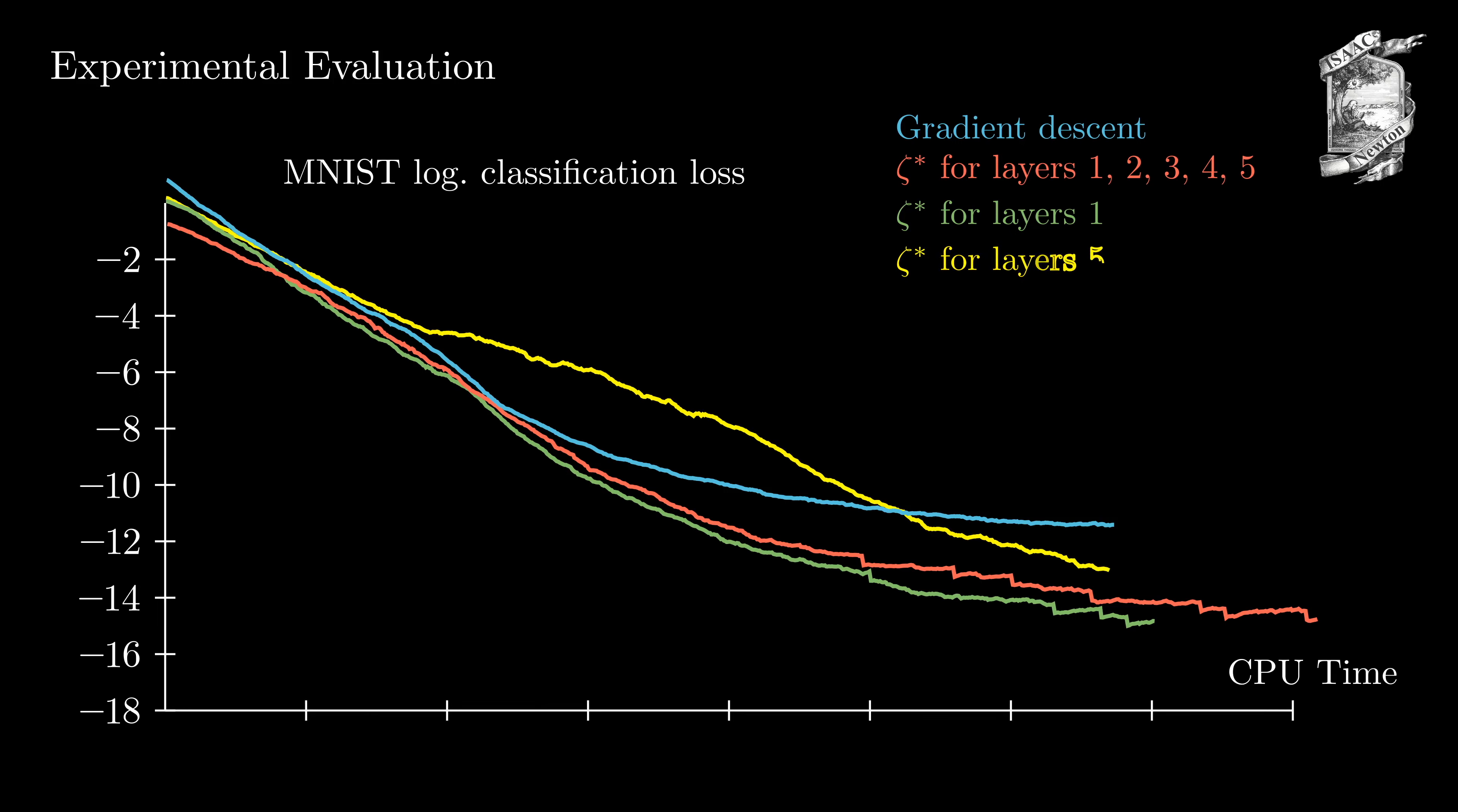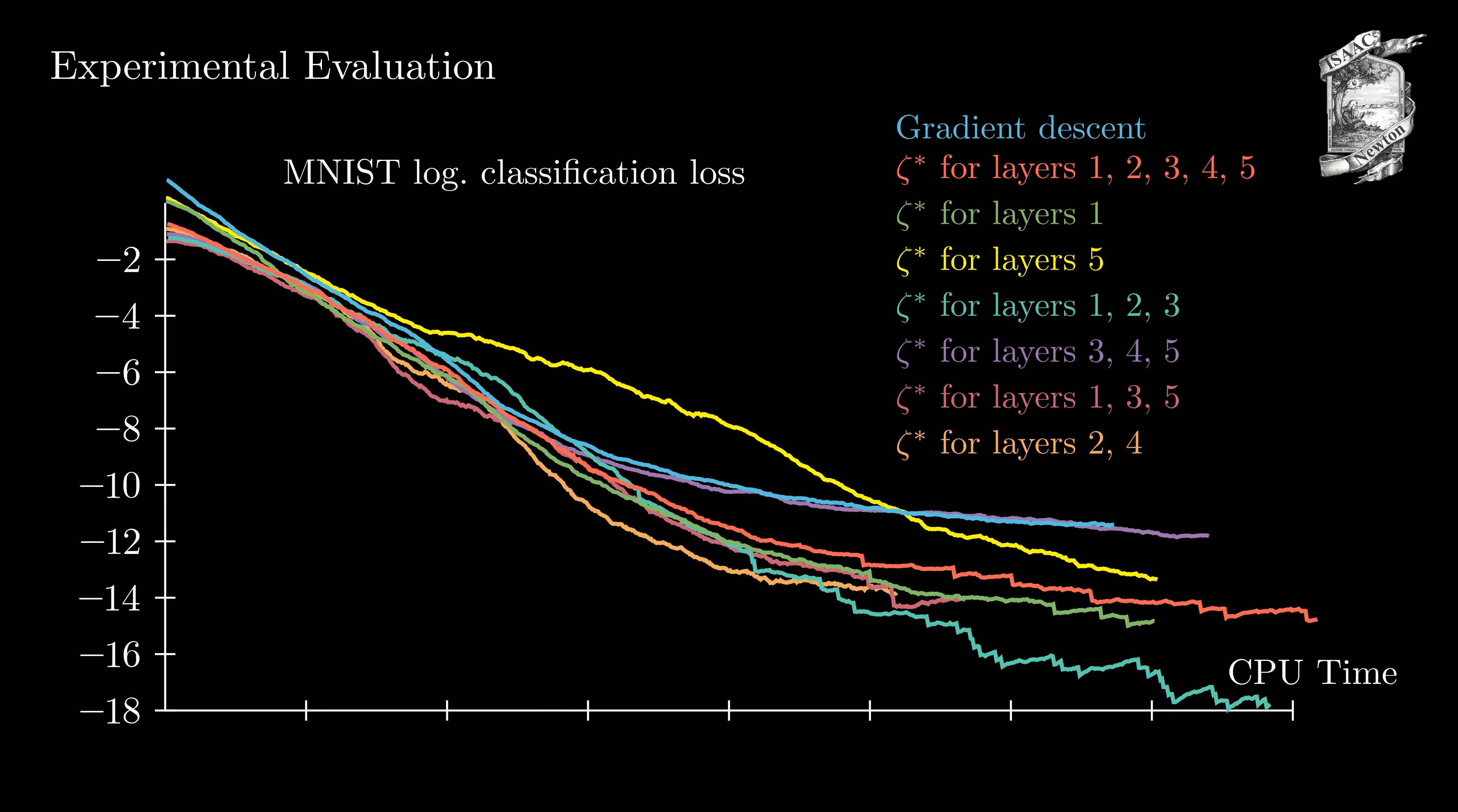If we apply ISAAC only to the last layer, the performance gain is rather small and it's only better in early and late training. Applying ISAAC to the first three layers performs best. Applying ISAAC only to the last three layers performs comparable to gradient descent and therefore does not really give us an advantage. Applying it only to every other layer leads to mixed results. What we can take away from this experiment is that we can apply ISAAC to a subset of layers and that applying ISAAC to the earlier layers is more important than applying it to the later layers.